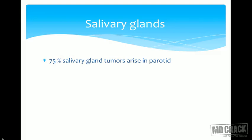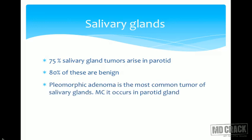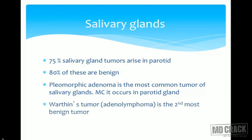Moving to salivary glands: 75% of salivary gland tumors arise in the parotid gland, and 80% of these are benign. Pleomorphic adenoma is the most common tumor of the salivary gland and most commonly occurs in the parotid gland. So the parotid is most involved, and pleomorphic adenoma is the most common salivary gland tumor.